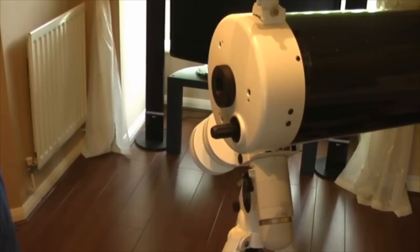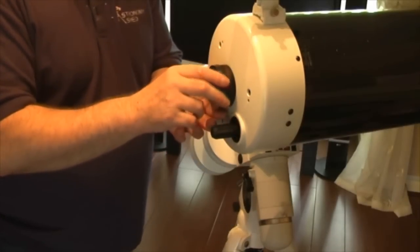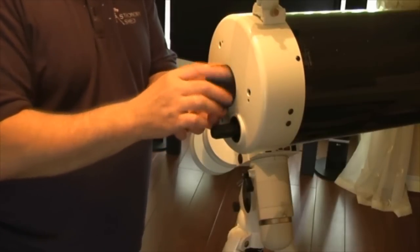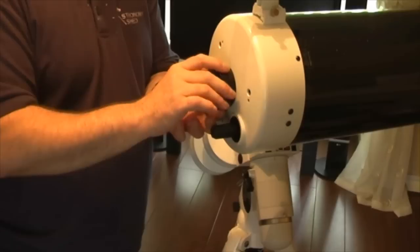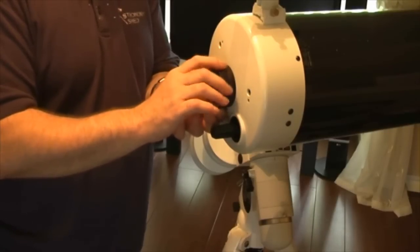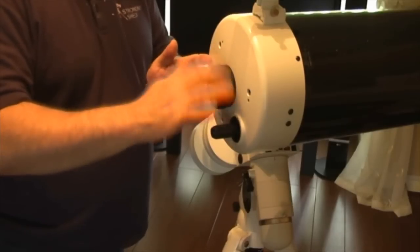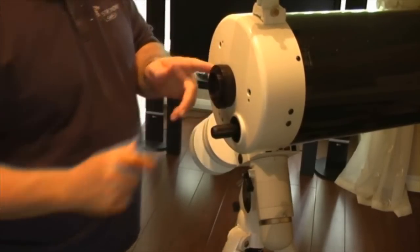Eventually like so and that just takes away the adapter and the full diagonal and everything. What we do next is we take the adapter and that screws directly onto what we call the visual back on the scope. So we screw that on. They're quite a fine thread so be very careful that you don't actually cross thread them. There we go.